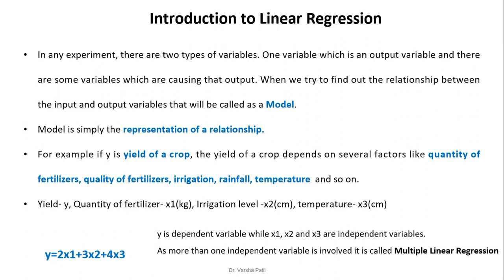For example, if y is the yield of a crop, the yield of the crop depends on several factors like quantity of fertilizers, quality of fertilizers, irrigation, rainfall, temperature, and so on. Now, out of these parameters, we are just taking three parameters: quantity of fertilizers, irrigation level, and temperature, which are represented by x1, x2, and x3.